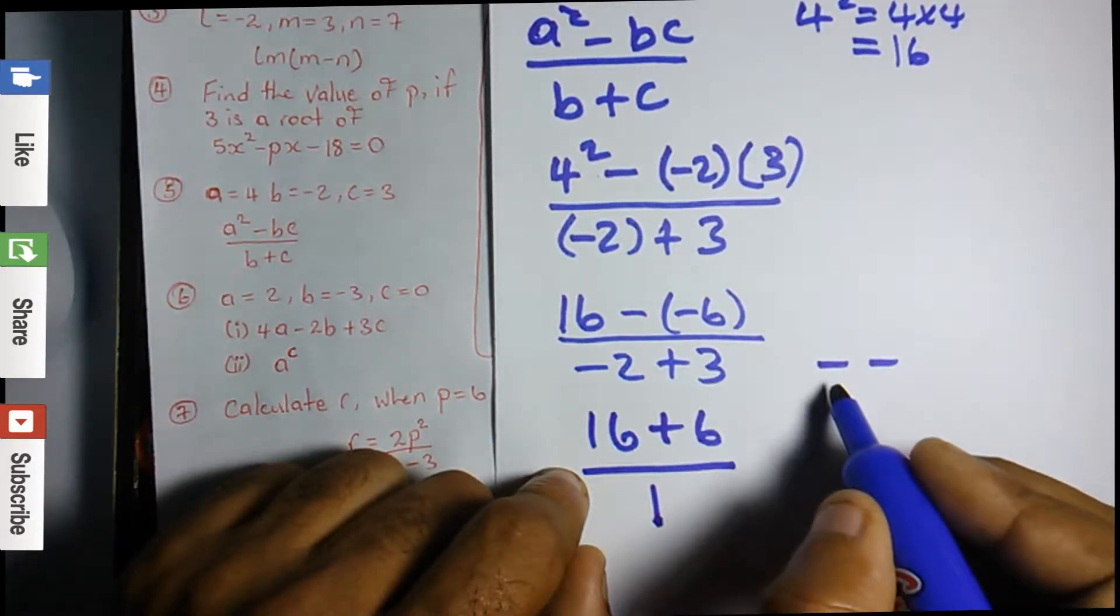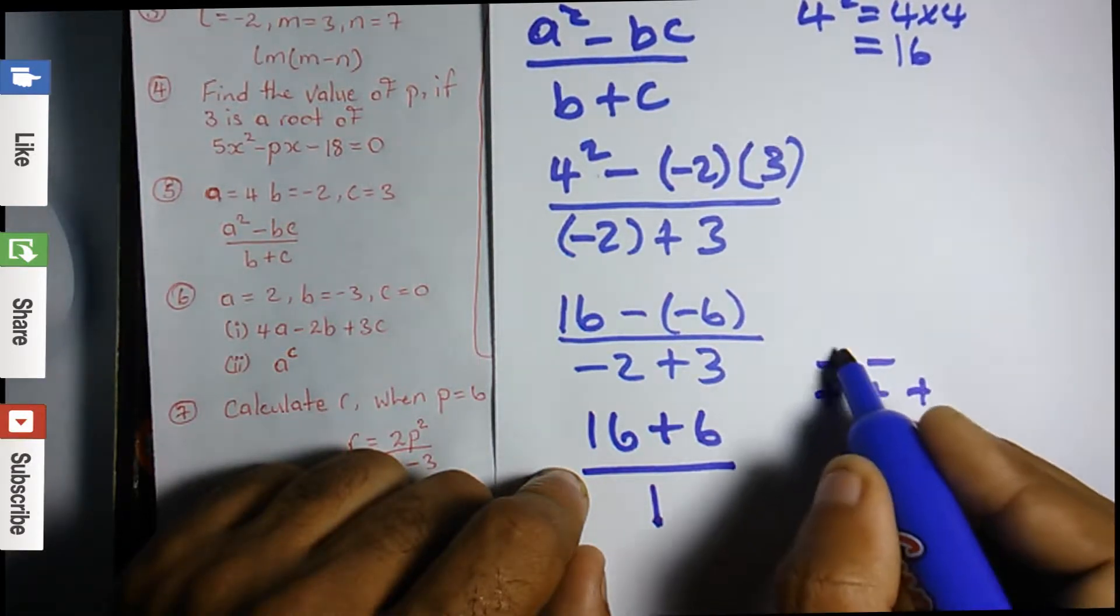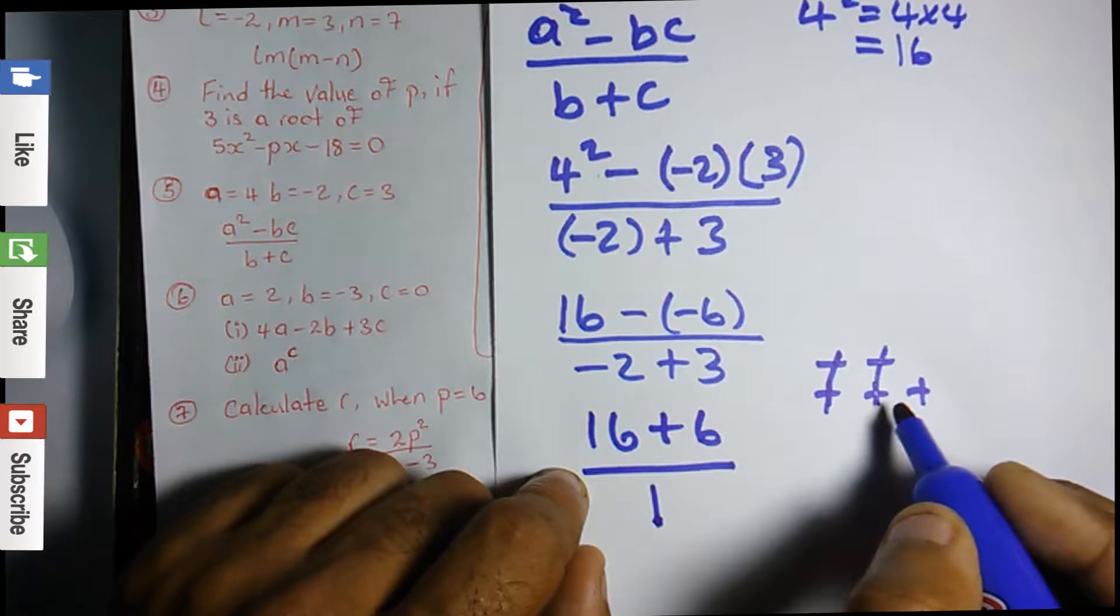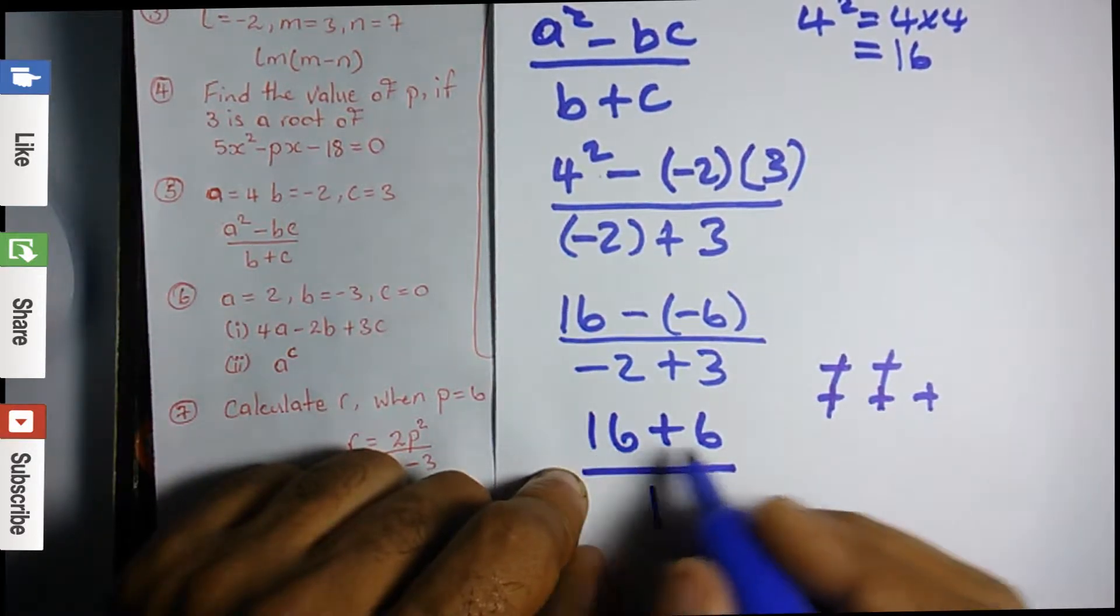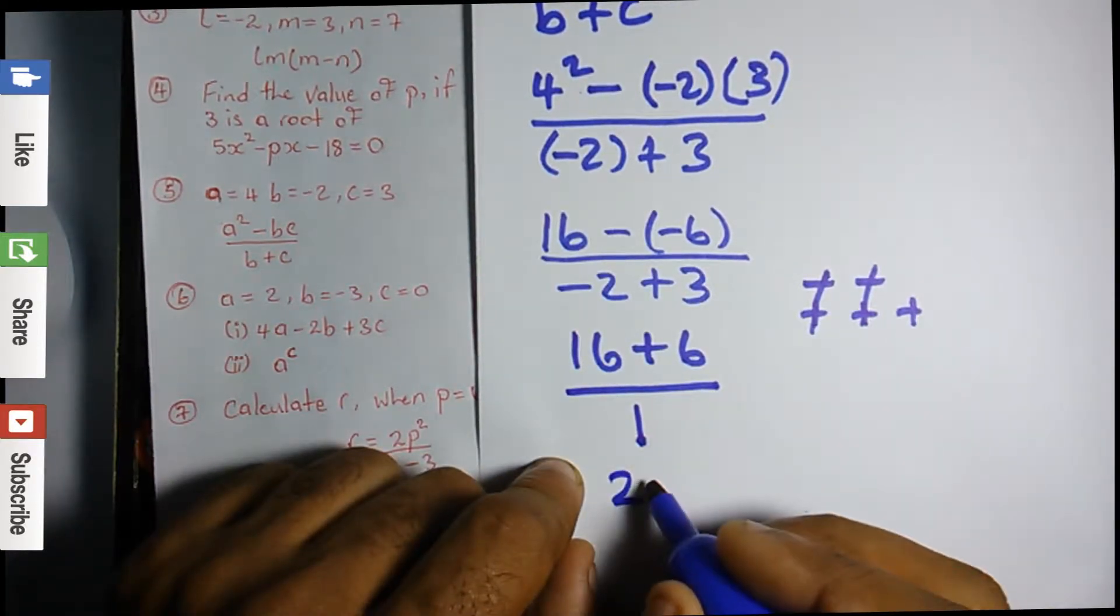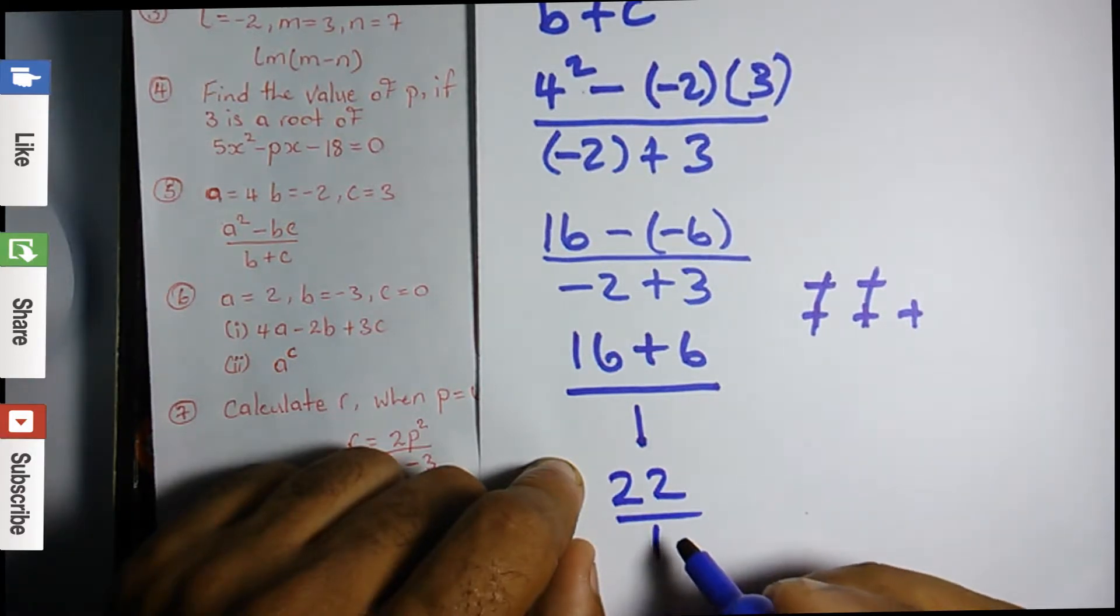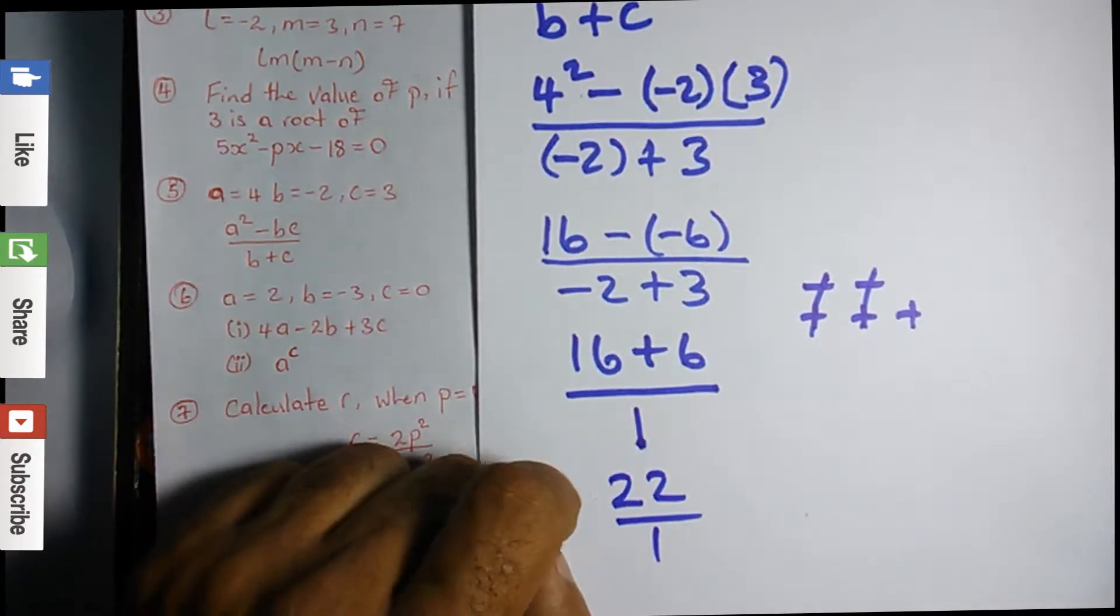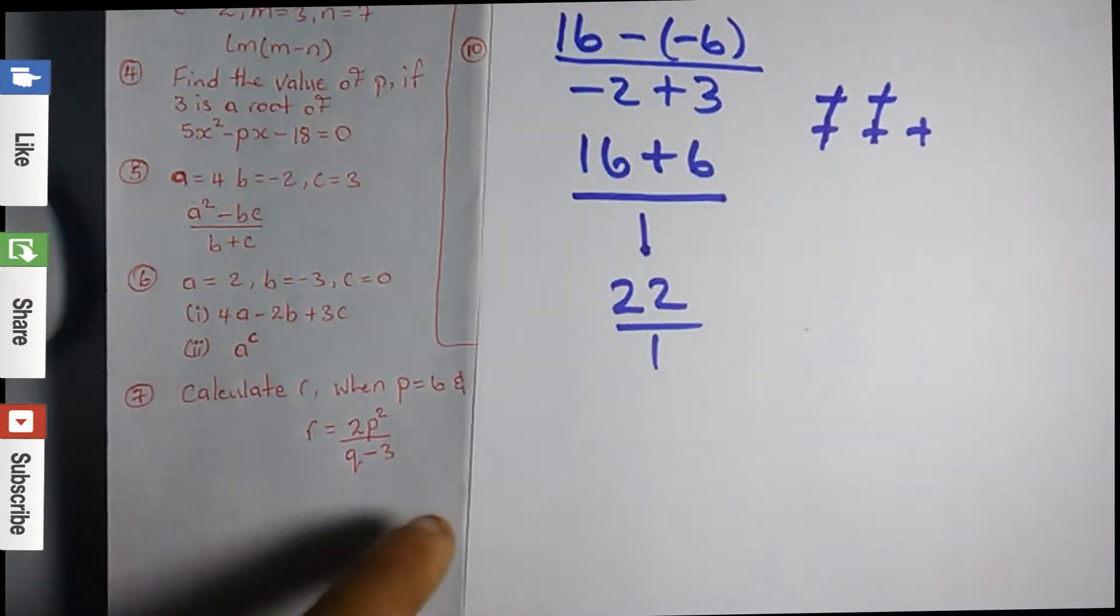Now 16 plus 6 is 22 over 1. 22 over 1 is the correct answer for that question.